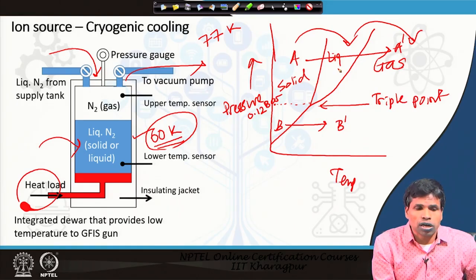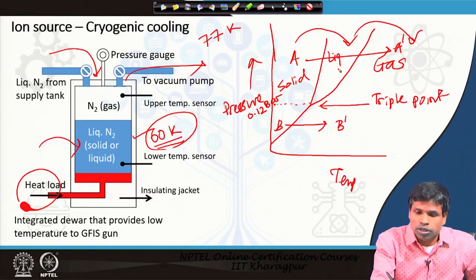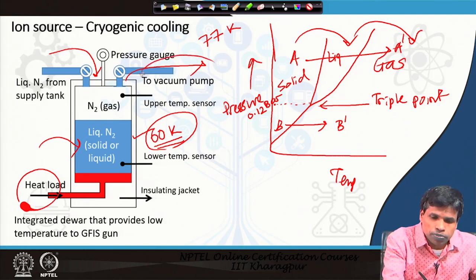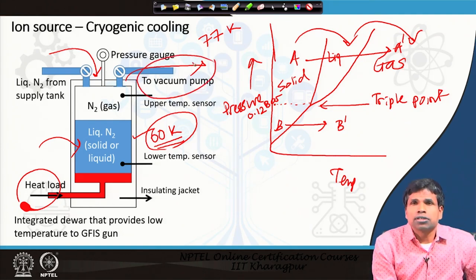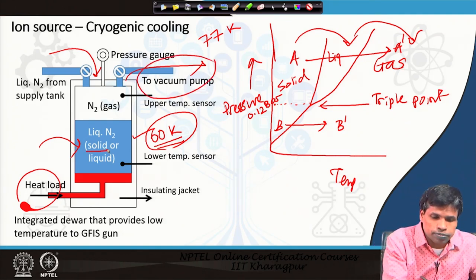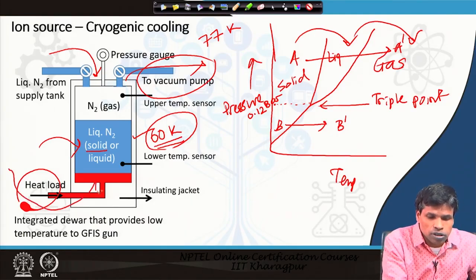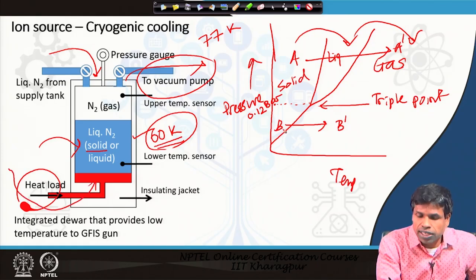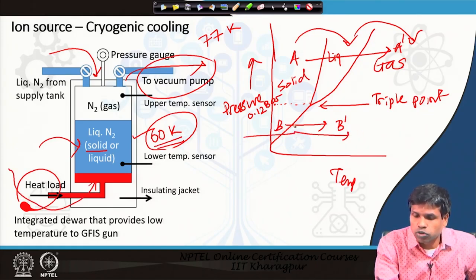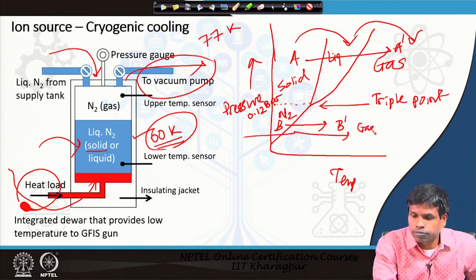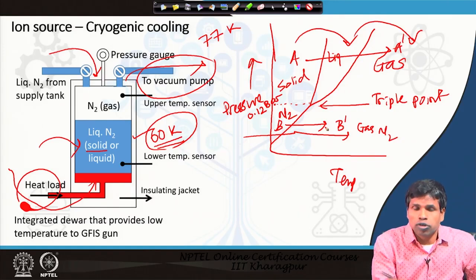If we use solid nitrogen at atmospheric pressure, it converts to liquid and then to gas, and the boiling liquid creates vibration that cannot be accommodated for the ion source. Therefore, a vacuum pump evacuates to below the triple-point pressure, and the heat load causes the solid nitrogen to sublime directly to gas — solid nitrogen to gas nitrogen — with no vibration during this direct conversion.